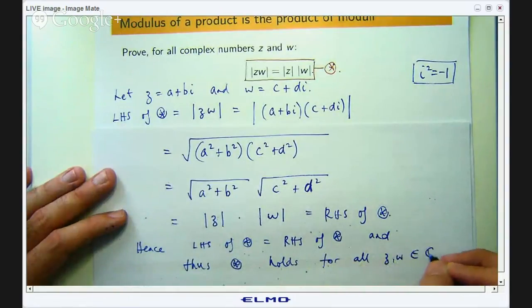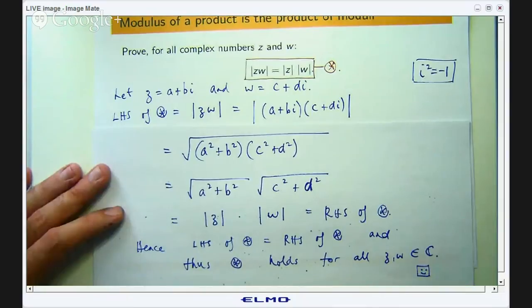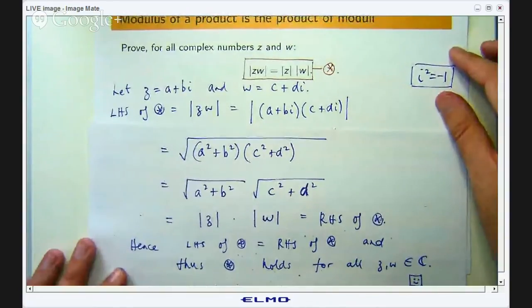So for all z and w in the set of complex numbers, that's it. Okay, so we've proved our identity. Well, that's a proof of one of the identities that I showed you in the previous presentation. I might get back to some more of them.